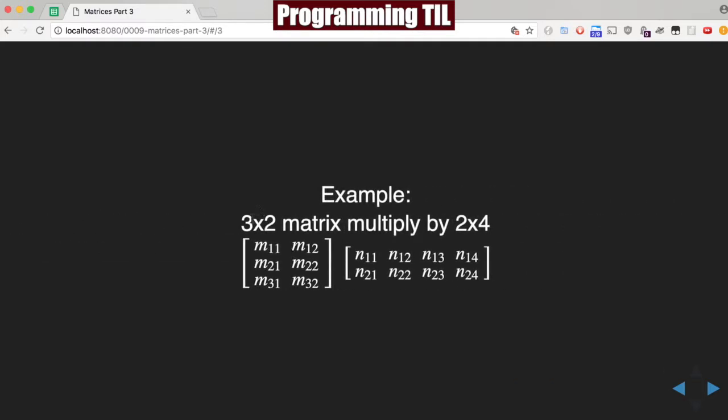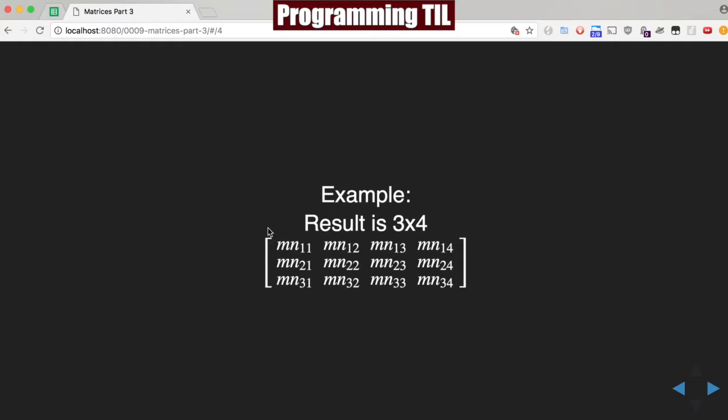So here's an example, a 3 by 2 is able to be multiplied by this 2 by 4. So this 3 rows by 2 columns is able to be multiplied by this 2 row by 4 columns. And the result is a 3 by 4.